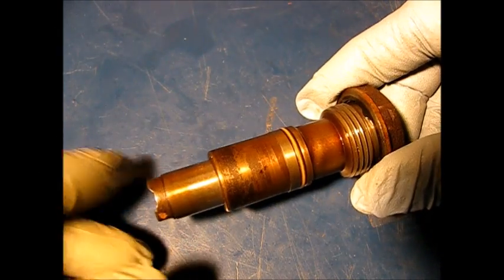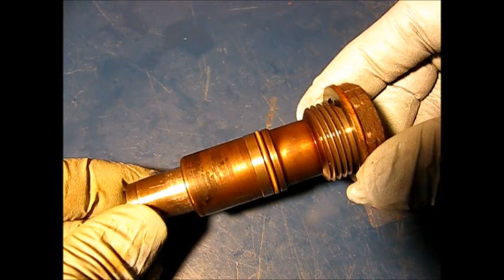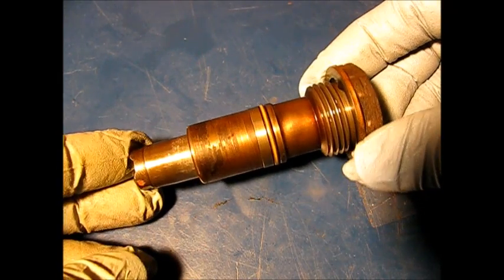Hi, this is David. This is a tensioner, a timing chain tensioner from a 2003 Chevy Cavalier, 2.2 liter Ecotec engine.